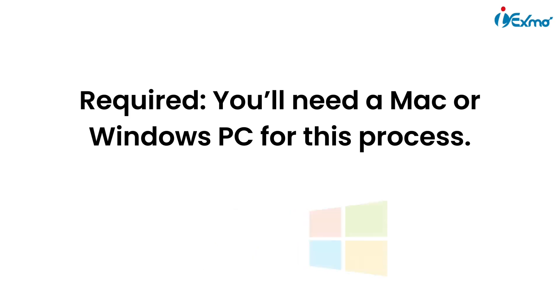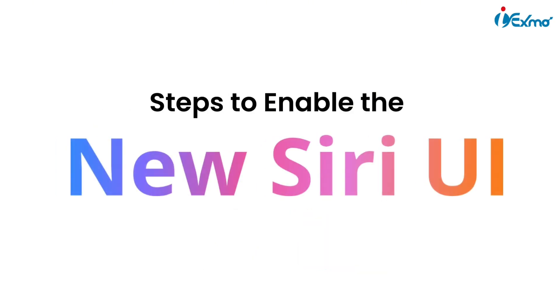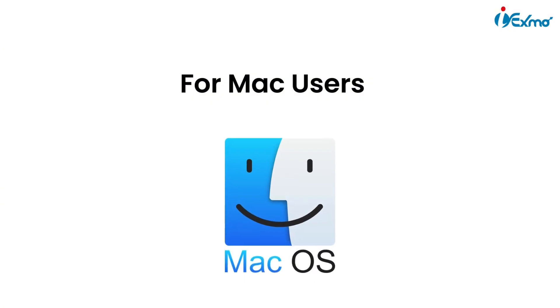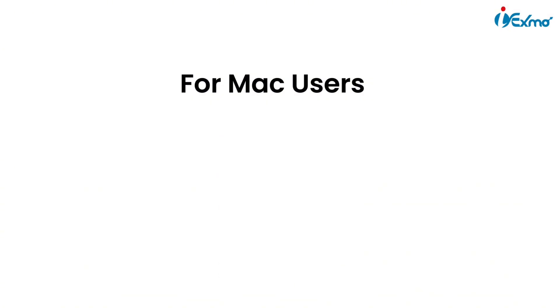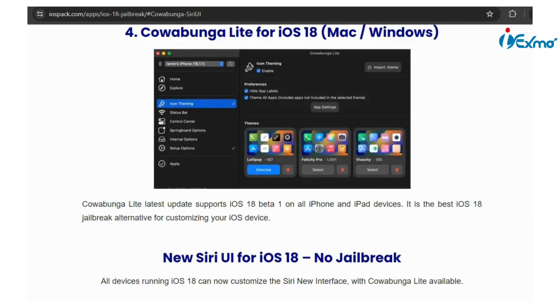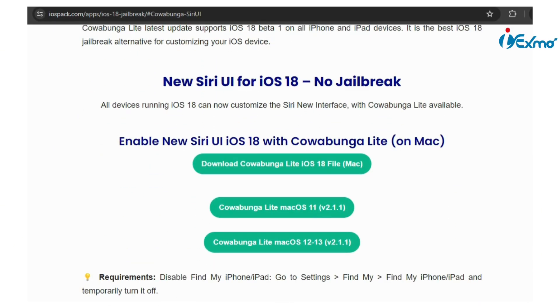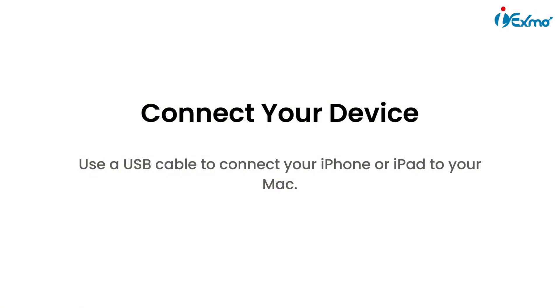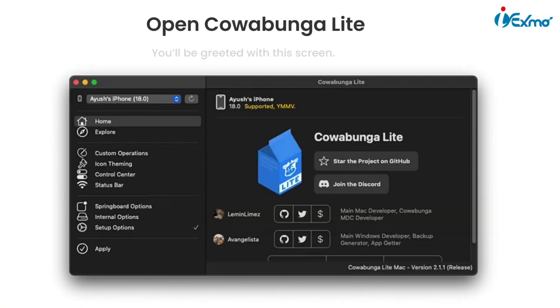Mac users, here's what you need to do. Download and install Cowabunga Light. Open your web browser and type in iospack.com. Once you're there, head over to the app section and click on iOS 18 Jailbreak. This official site has everything you need — all the download links and iOS customizations — and the best part, you can do it all without needing a computer online.